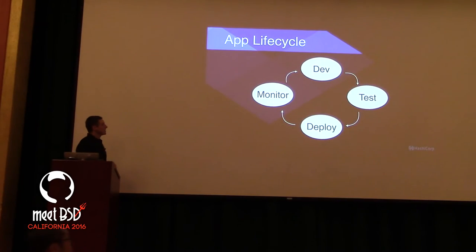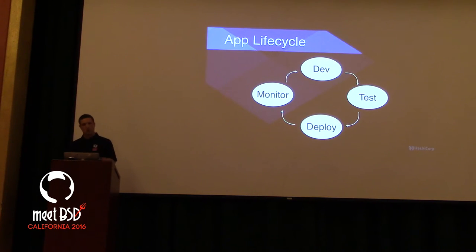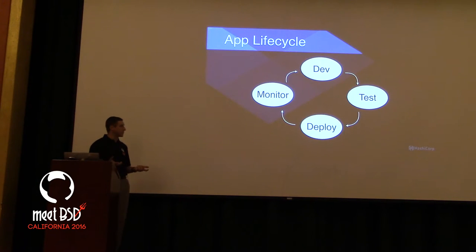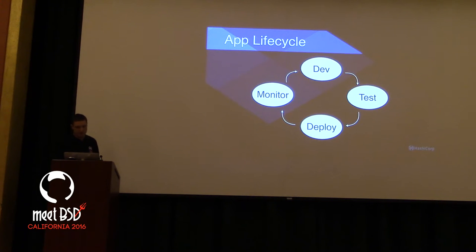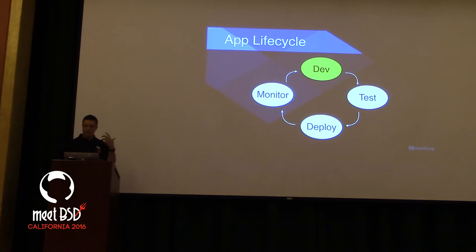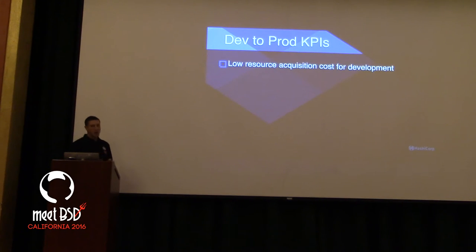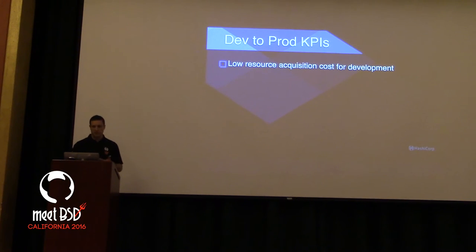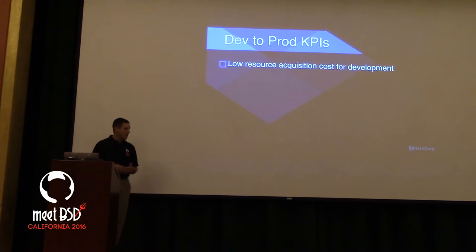The application lifecycle looks like this: you do some development, you test, figure out what you're going to do, put it into production, monitor to see if you like what happened, get some feedback, then rinse and repeat. I'm going to start talking about doing development on FreeBSD, which may sound odd given that we're at a developer conference. Things that matter when you're doing development on FreeBSD — or just any application — is what's the cost of acquiring a resource.